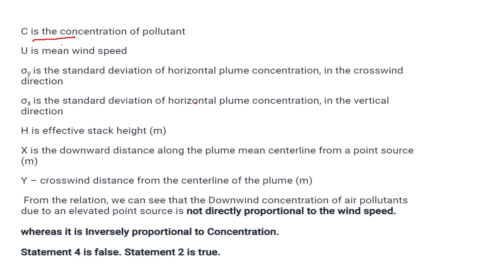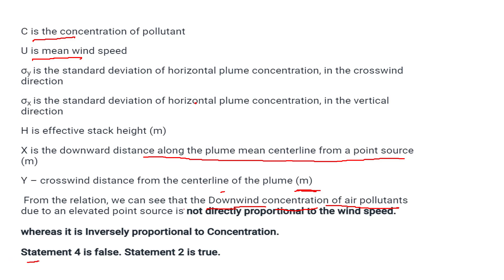The parameters are: C is the concentration of a pollutant, U is the mean wind speed, sigma-y is the standard deviation of horizontal plume concentration in the crosswind direction, sigma-z is in the vertical direction, sigma-h is the effective stack height, capital X is the downwind distance along the plume centerline from the point source in meters, and Y is the crosswind distance from the centerline of the plume in meters. From this relation, we can see that downwind concentration of air pollutants due to a point source is not directly proportional to wind speed — it is inversely proportional. Therefore, statement 4 is false and statement 2 is true according to Fick's Law equation.